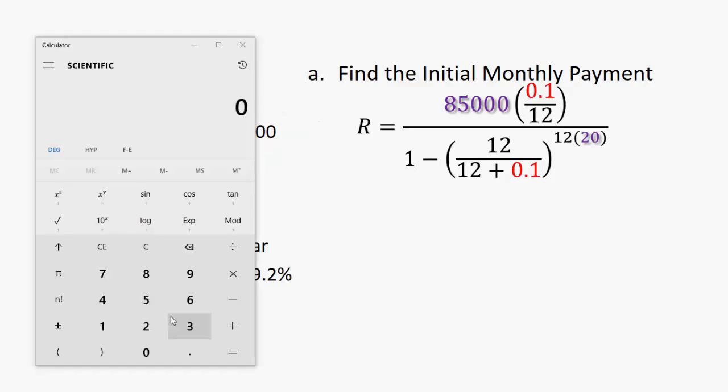One of the things you really need to pay attention to when you're trying to evaluate an expression on a calculator is order of operations. Notice that in the numerator, we have 85,000 being multiplied by 0.1 divided by 12. Multiplication and division are really the same operation. The order in which these operations occur doesn't really matter. So that makes the numerator a lot easier to calculate.